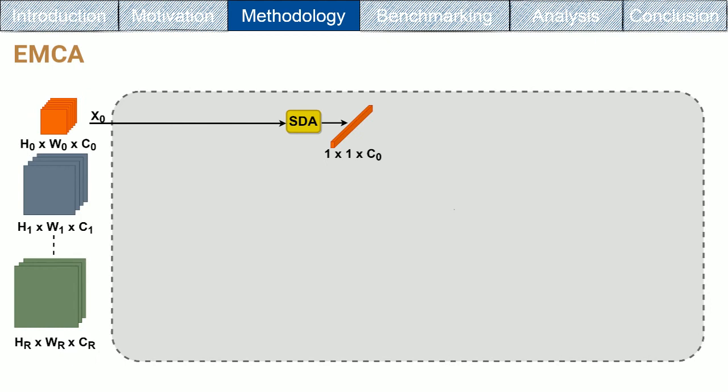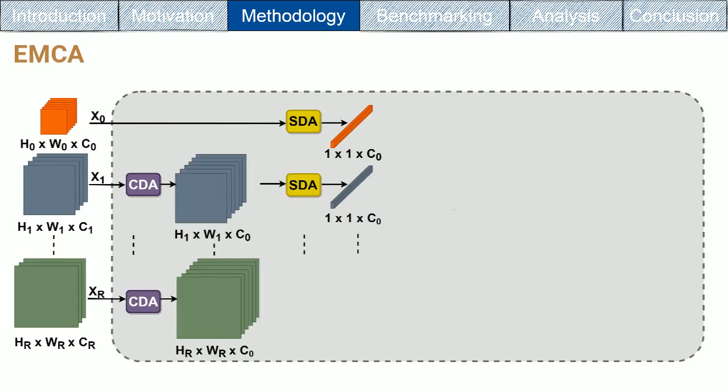Then, the earlier multi-scale features XM have different channel dimensions, as the convention is as we go deeper in the network, the depth is increased. Therefore, a channel dimension alignment module, termed CDA, is exploited to align the channel dimension among different CNN blocks by using a simple 1D convolutional layer.